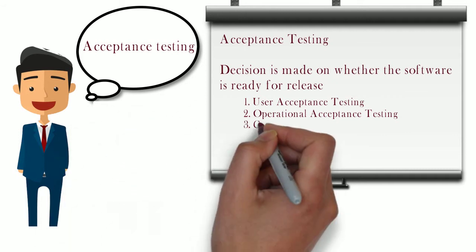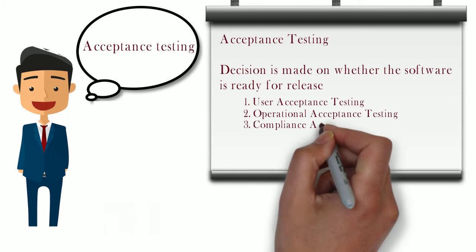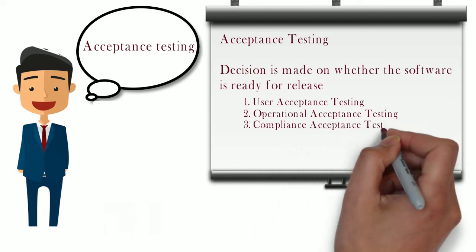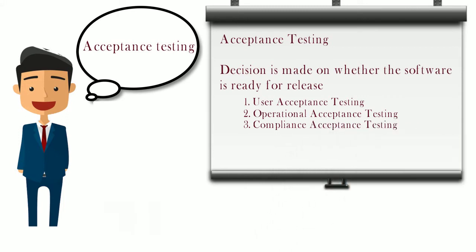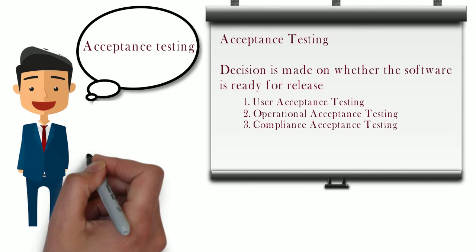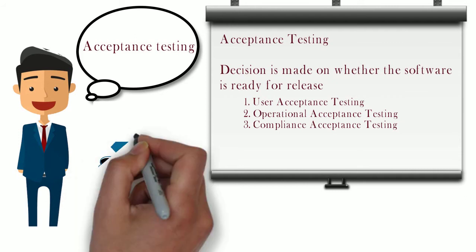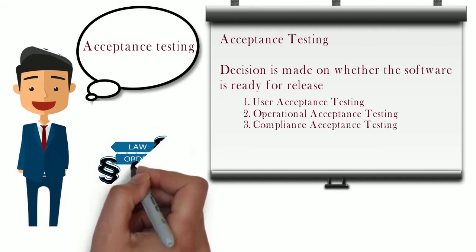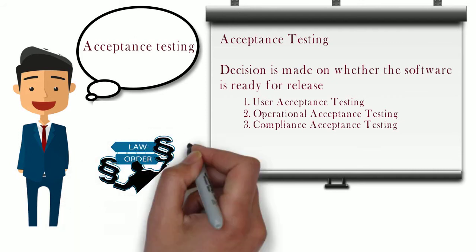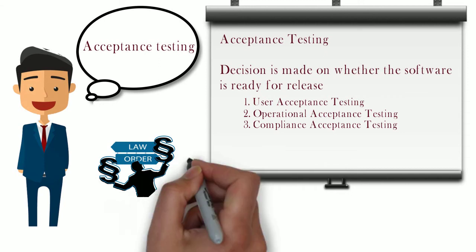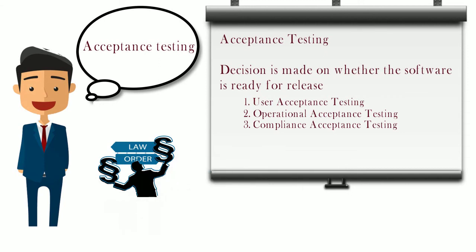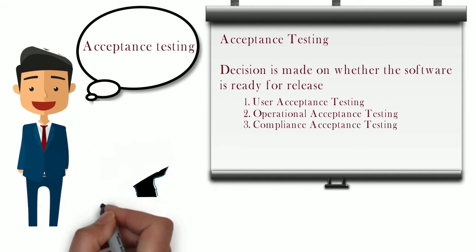The next type is compliance acceptance testing, where testing focuses on the rules, regulations, and policies of the country where the shopping website operates. For example, if there is a policy that customers cannot buy products online if the price is greater than fifty thousand dollars, then the software must be compliant with that rule.